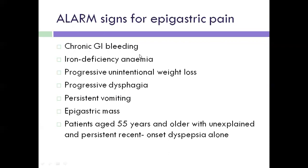Alarming signs include chronic GI bleeding, iron deficiency anemia, progressive unintentional weight loss, progressive dysphagia, persistent vomiting, epigastric mass, etc. Dysphagia is one of the important symptoms for gastric problems. Due to continuous destruction of the mucus layer, the patient cannot eat food properly. These are the important signs which indirectly indicate peptic ulceration.